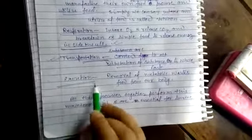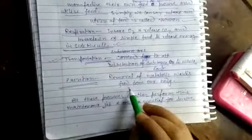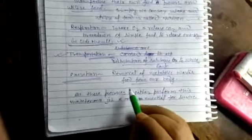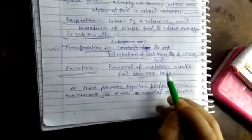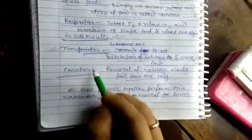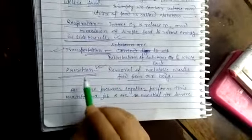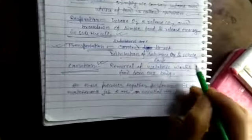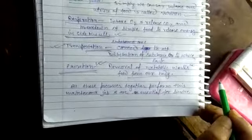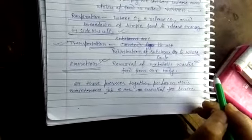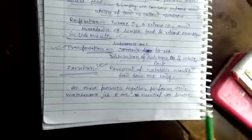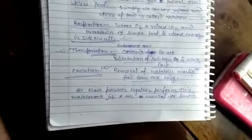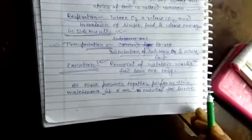Another is excretion. Removal of metabolic waste from our body is called excretion. It is also essential because only this process helps us to remove, to excrete the poisonous or useless substances from our body. So all these processes together form this maintenance job and are essential for survival.